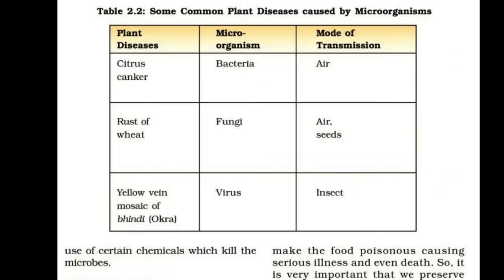First: Citrus canker — the causative microorganism is bacteria, transmitted through air. Second: Rust of wheat — caused by fungi, spread through seeds. Third: Yellow vein mosaic of bhindi — a viral disease with its own mode of transmission.